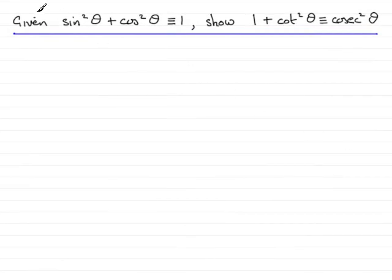Now in this next question we're given that sin squared theta plus cos squared theta is identical to 1, and we're asked to show that 1 plus cot squared theta is identical to cosec squared theta.